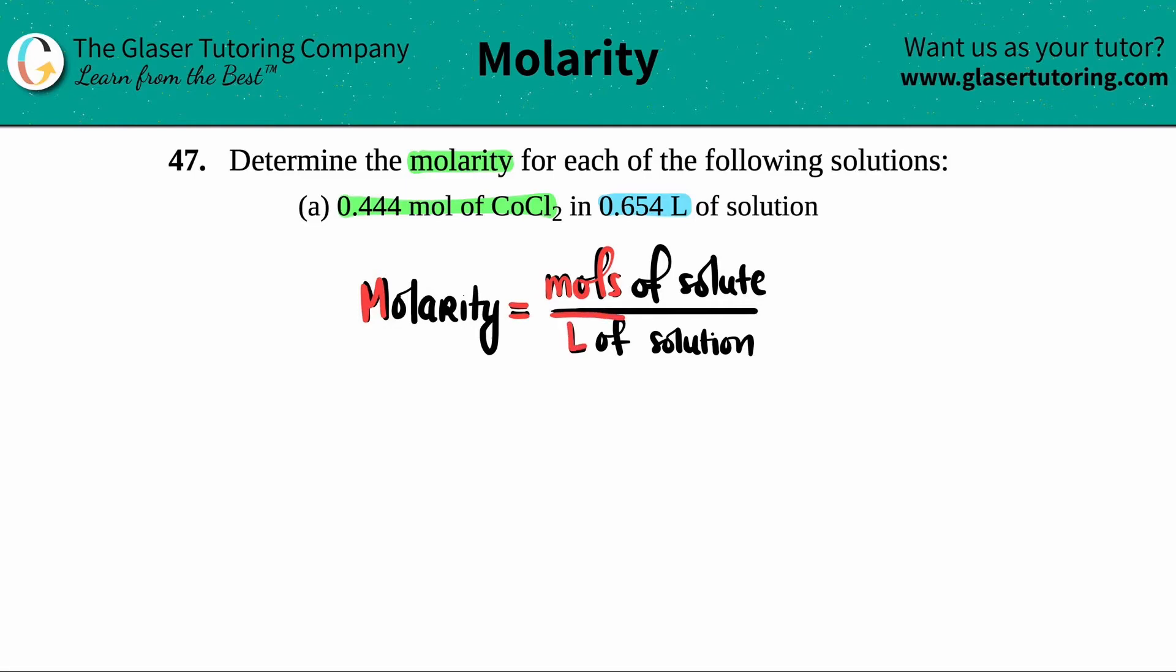So that's what I'm going to write down here: molarity equals moles over liters. We want to find the molarity. Do we have moles and do we have liters? Well, for the moles they told us that we had 0.444 moles, and for the liters, the L on the bottom, they told us that we had 0.654 liters. The units are all cool - moles divided by liters.